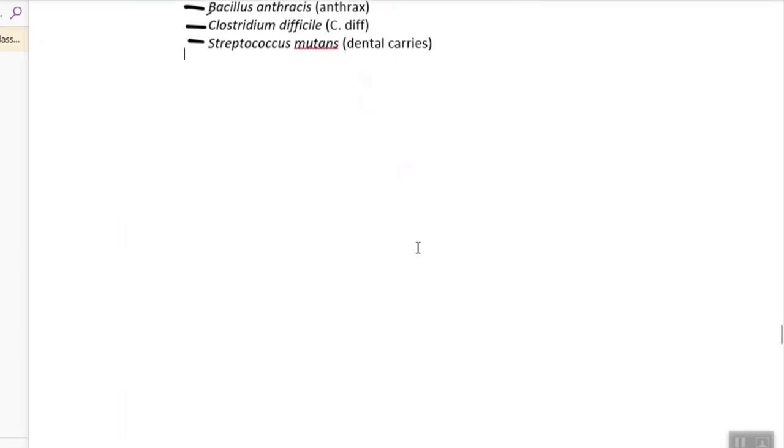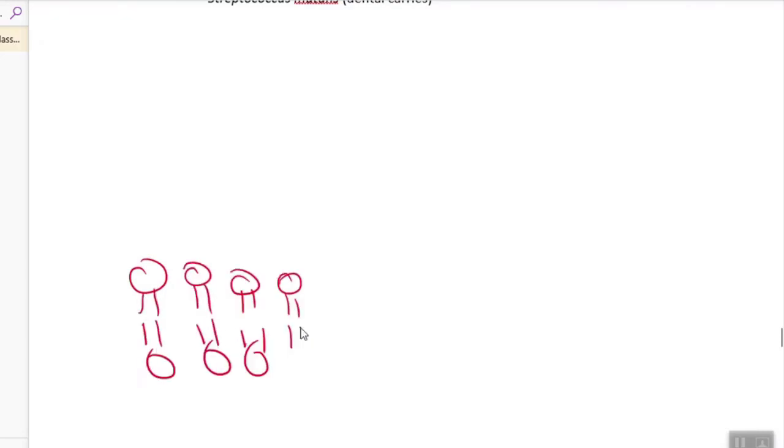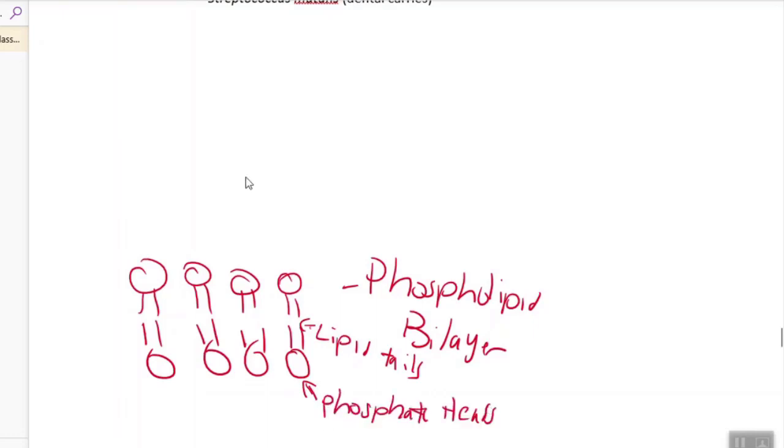Here is what the gram-positive cell wall looks like. I'm going to do a drawing here. First of all, we have our regular cell membrane, this is our plasma membrane. Remember, this is a phospholipid bilayer. Facing the inside here we have the lipid tails. On the outside here, these little round things, these are the phosphate heads.